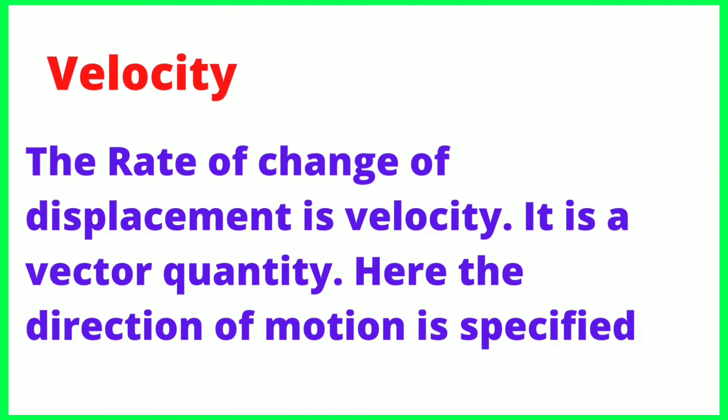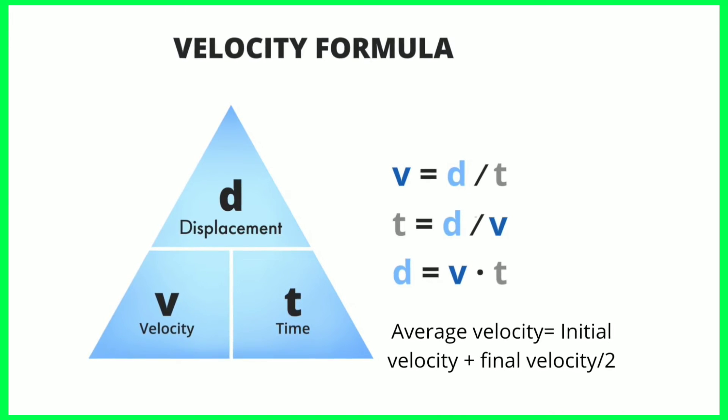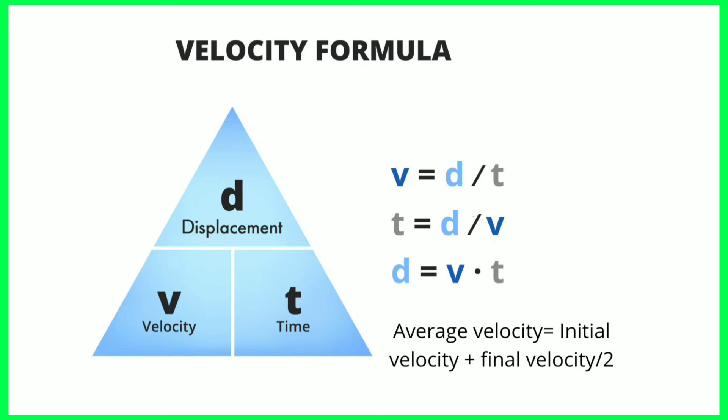Velocity is the rate of change of displacement. It is a vector quantity — the direction of motion is specified. If we change direction, the velocity changes. Average velocity equals initial velocity plus final velocity divided by 2. The formula: v = d/t, d = v × t.